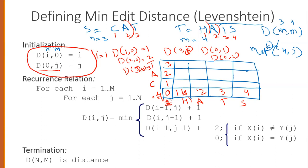This initialization means we are reading the source characters while the target is the null string, so we delete all characters one by one. If i=1, we delete one character, cost 1. If i=2, we delete two characters. If i=3, we delete three characters. And d[0,j] means the source is null and we insert characters into the target one at a time.